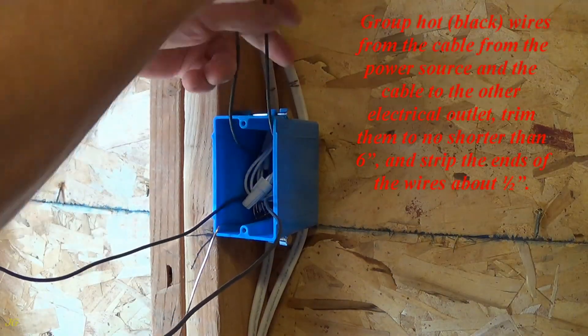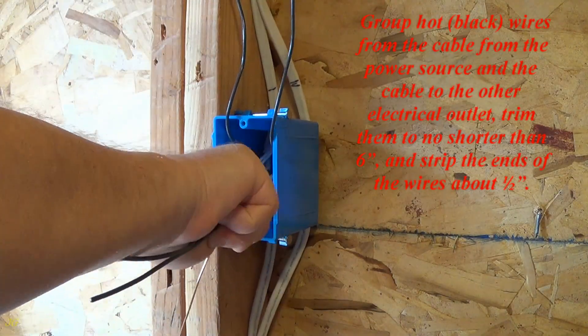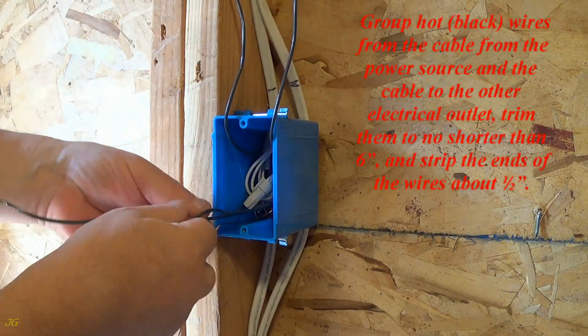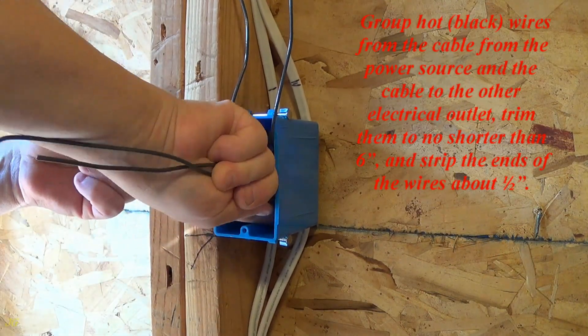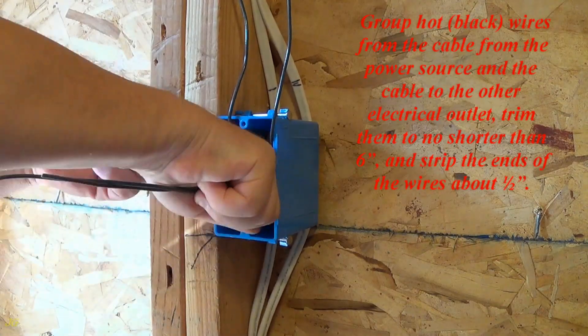Group hot, black, wires from the cable from the power source and the cable to the other electrical outlet, trim them to no shorter than 6 inches, and strip the ends of the wires about one half inch.